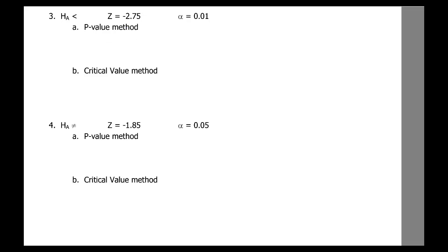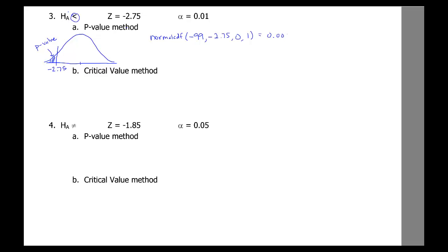Example three is a left-tailed test — less than. They give us a z of negative 2.75. We want the area to the left of that as our p-value. Using normal CDF with a very low minimum, negative 2.75 as maximum, mean 0, standard deviation 1, we get 0.003. Alpha given in the problem is 0.01, and 0.003 is less than 0.01 — so p-value less than alpha, we reject the null hypothesis.